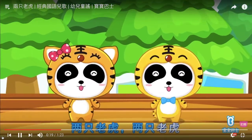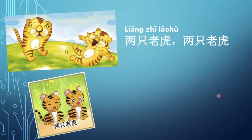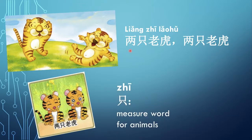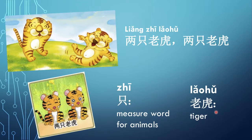两只老虎. 两 means 'two.' 只 is the measure word for animals. 老虎 means 'tigers.' So 两只老虎 is 'two tigers.' If we want to say 'one tiger,' we say 一只老虎. So 两 means 'two,' as we said before.